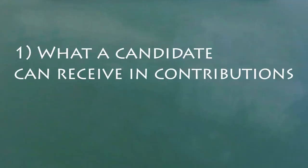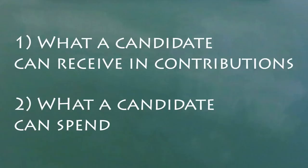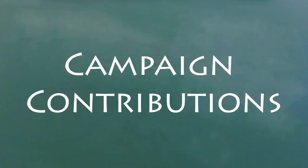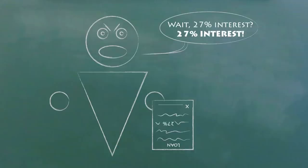What a candidate can receive in contributions and what they can spend. You should know that spending money on candidates in an election is entirely different than lobbying, which covers spending to support or oppose a specific law. A contribution is defined as anything of value given or loaned to influence an election. The rule doesn't cover everything given or loaned, just those gifts and loans given to influence elections.